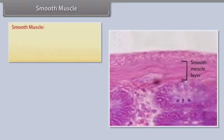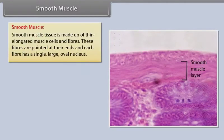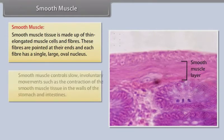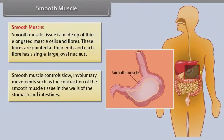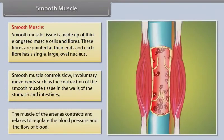Smooth muscle tissue is made up of thin, elongated muscle cells and fibers. These fibers are pointed at their ends and each fiber has a single large oval nucleus. Smooth muscle controls slow involuntary movements, such as the contraction of smooth muscle tissue in the walls of the stomach and intestines. The muscles of the arteries contract and relax to regulate blood pressure and the flow of blood.